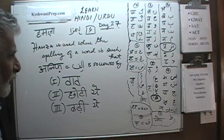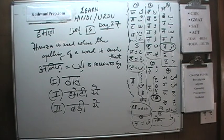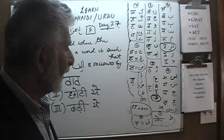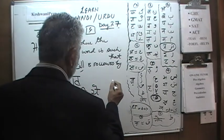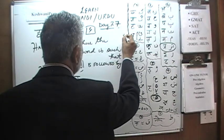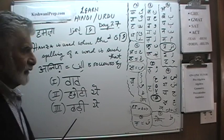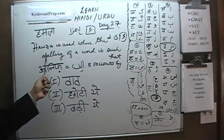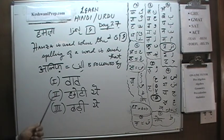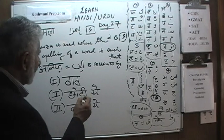In day number 26 there is a recapitulation. We learned that Hamza is a letter in the Urdu alphabet — it happens to be the third last letter. Then Chhotiyeh and then Badiyeh — that's how the alphabet ends. Hamza is used where the spelling of a word is such that Aleph is followed by a Wao, and that's the concept we did yesterday: Aleph followed by Wao makes an O sound.